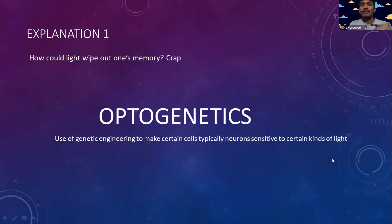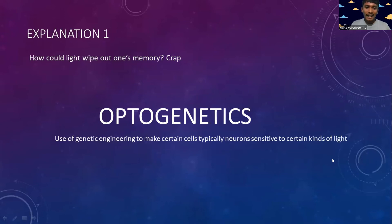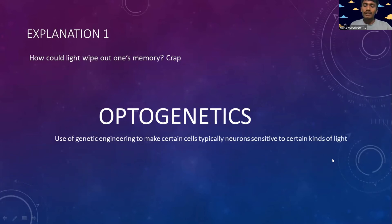Mouse brains and human brains are different, so how can this actually be real? This can actually be real if people are infected with light-sensitive proteins from optogenetics, and it's made sure that these proteins only react to the flash of the Neuralizer and not any other lights. Then that electrical signal traveling from the eyes to the brain could disrupt, excite, or confuse neurons associated with memory — like seizures can do.